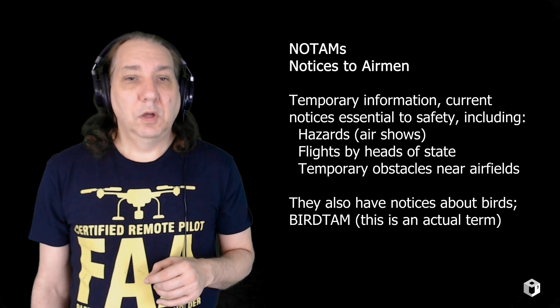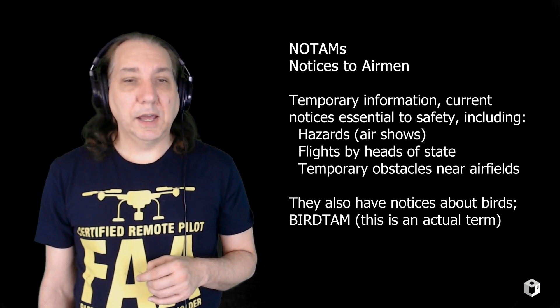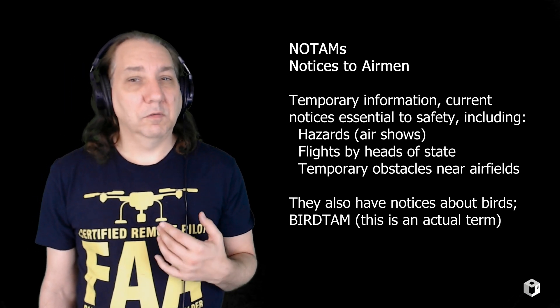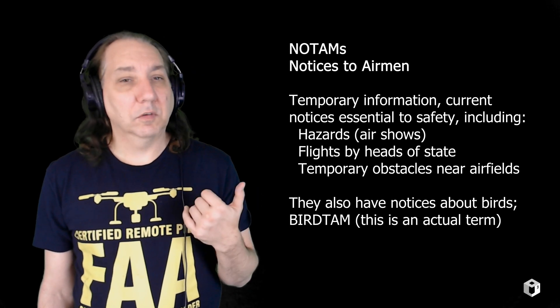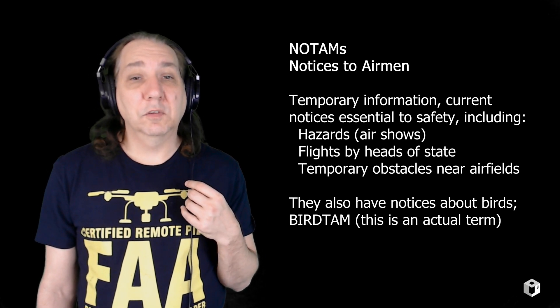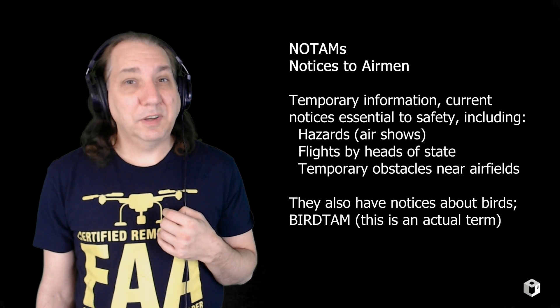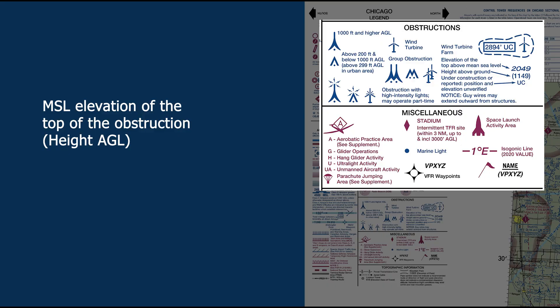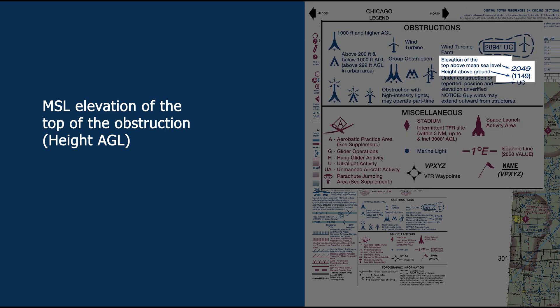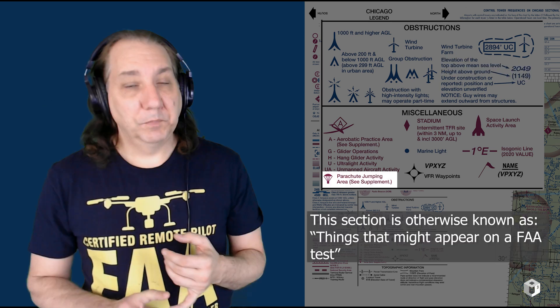Longitude is meridian — it runs north and south. The prime meridian is zero degrees. Keep that in mind when looking at charts. NOTAMs — Notices to Airmen — are temporary information, current notices essential to our safety. They include hazards like air shows, flights by heads of state, and temporary obstacles near airfields. There are also bird TAMs — notices about known bird activity. Maximum elevation numbers: a large number with a small number next to it — add two zeros. For example, 12 with a small 5 means 12,500 feet. Obstructions show two numbers: the top elevation above MSL, and below it in parentheses the height above ground level.